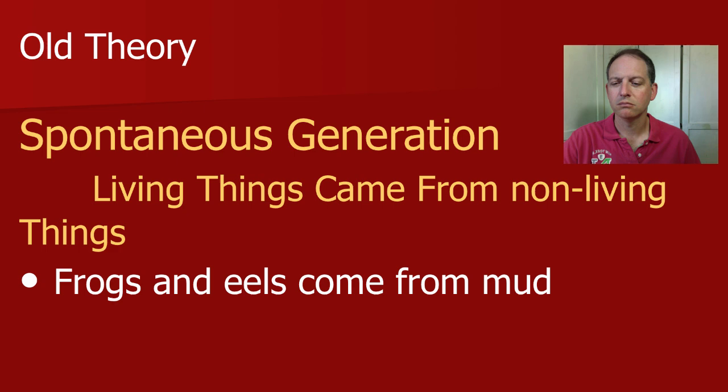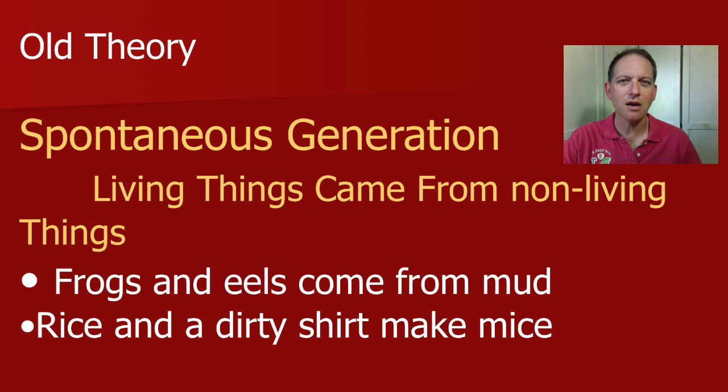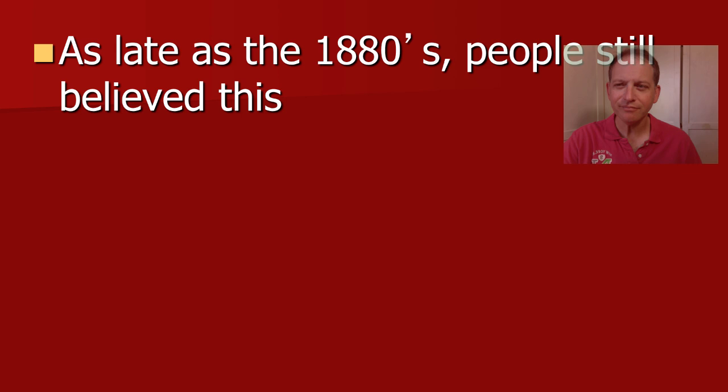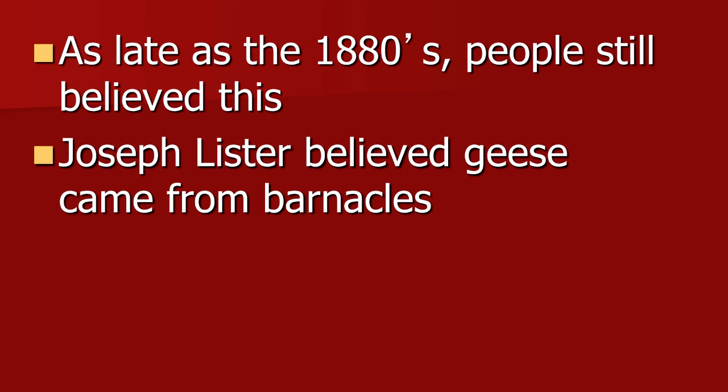The theory said that living things came only from non-living things. For example, people used to believe that frogs and eels came from mud. They believed that if you took rice and a dirty shirt, put it in a box, left it outside for five or six days — poof, a mouse would appear. They also believed that dead fish made flies — flies came directly from the dead fish. As late as the 1880s people still believed this. Joseph Lister believed that geese came from barnacles.